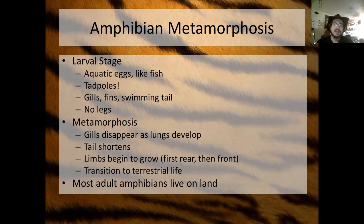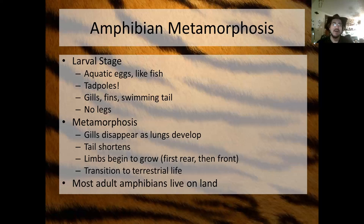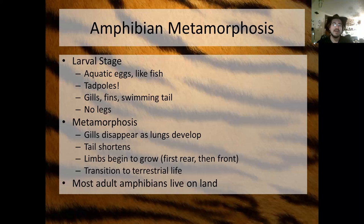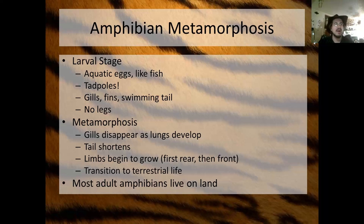Pesticides can often interfere with amphibian metamorphosis. High enough pesticide doses tend to produce amphibians with extra legs — five or seven malformed legs sticking out of weird places. That's a great indicator that something has gone horribly wrong. You'll see those effects in an amphibian long before you see them in the ecosystem at large. Something like 90% of amphibian species are declining in population — the amphibians are all dying off at record numbers, which is kind of scary.